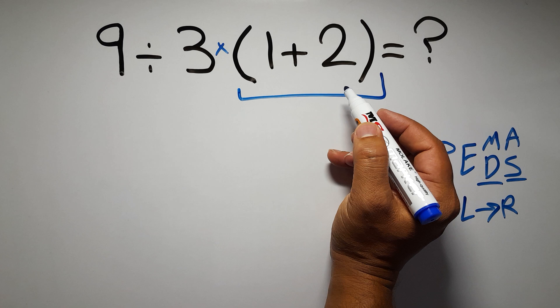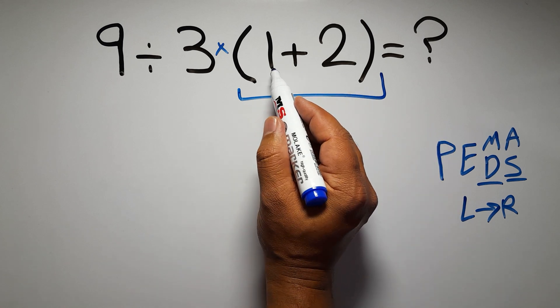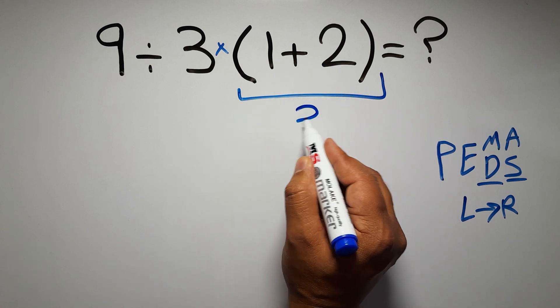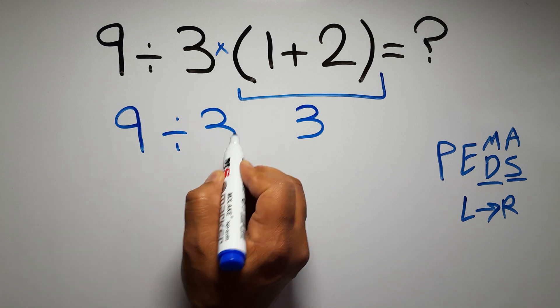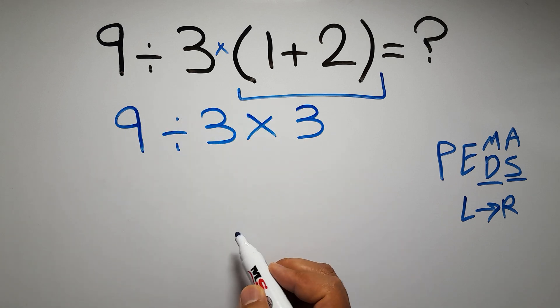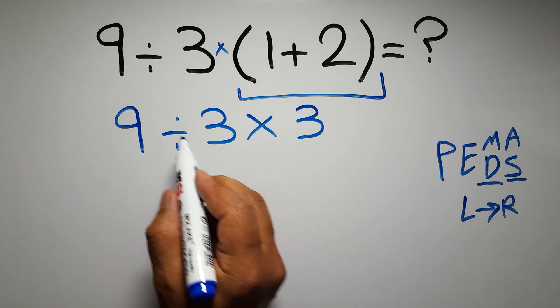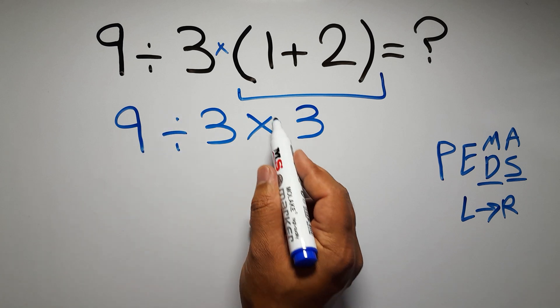So first these parentheses: inside these parentheses we have one plus two which equals three, so nine divided by three times three. In this expression we have one division and one multiplication.